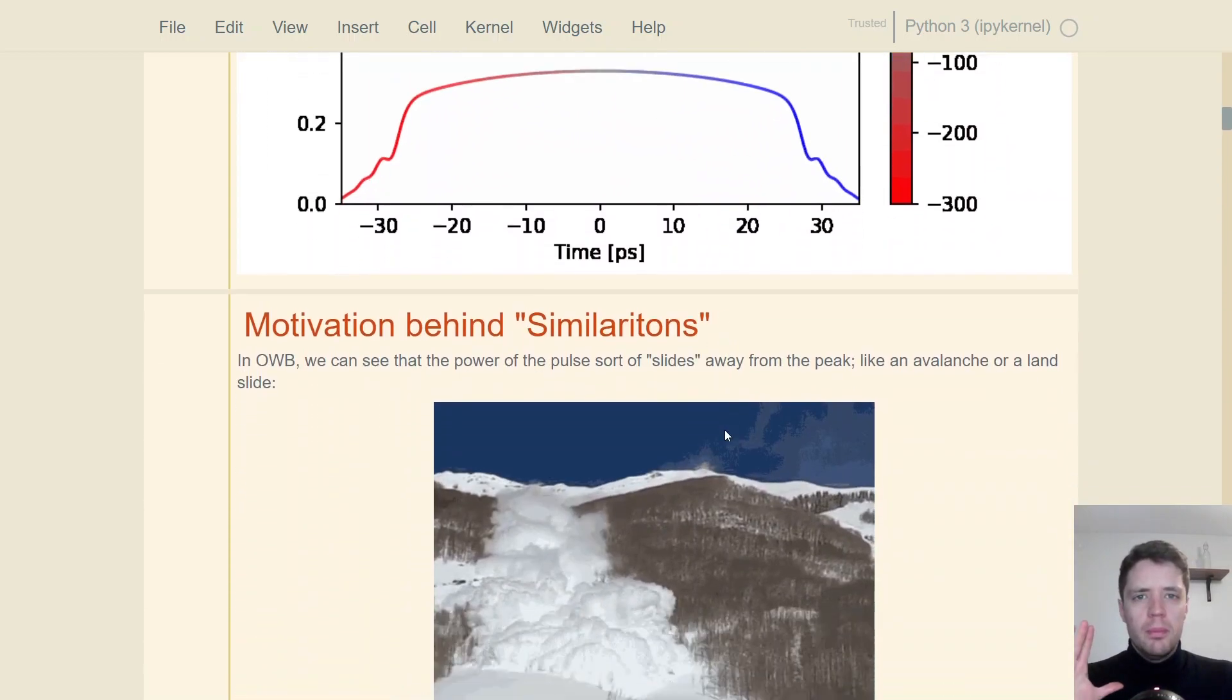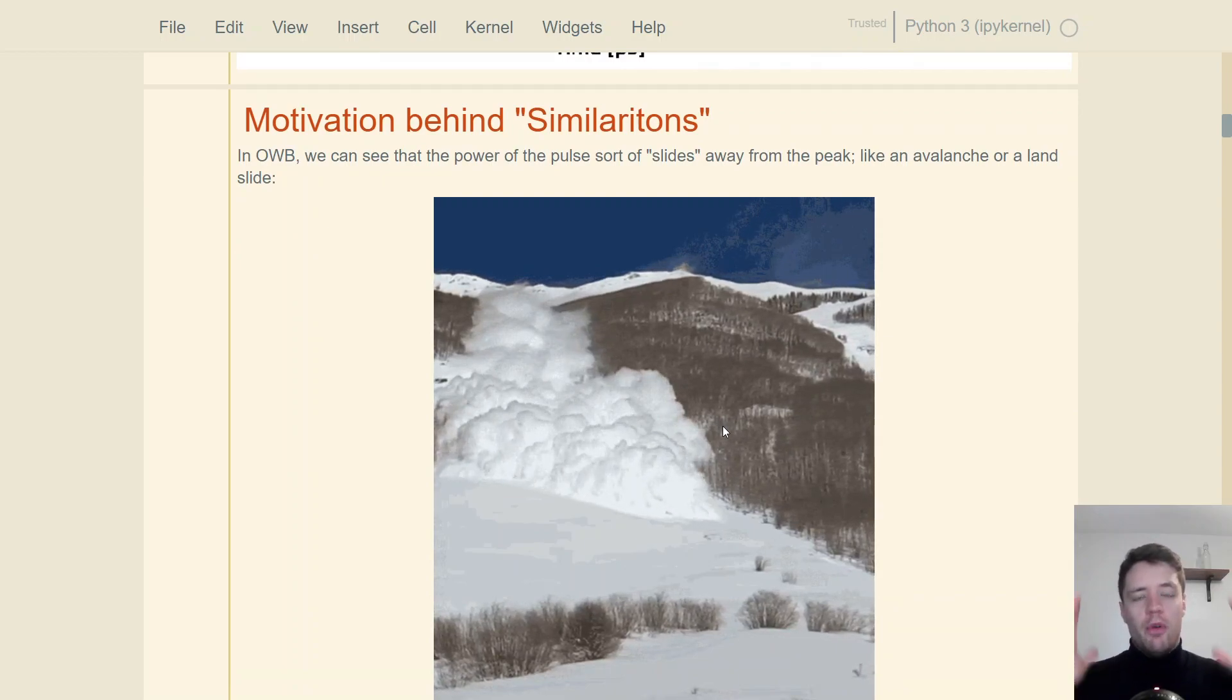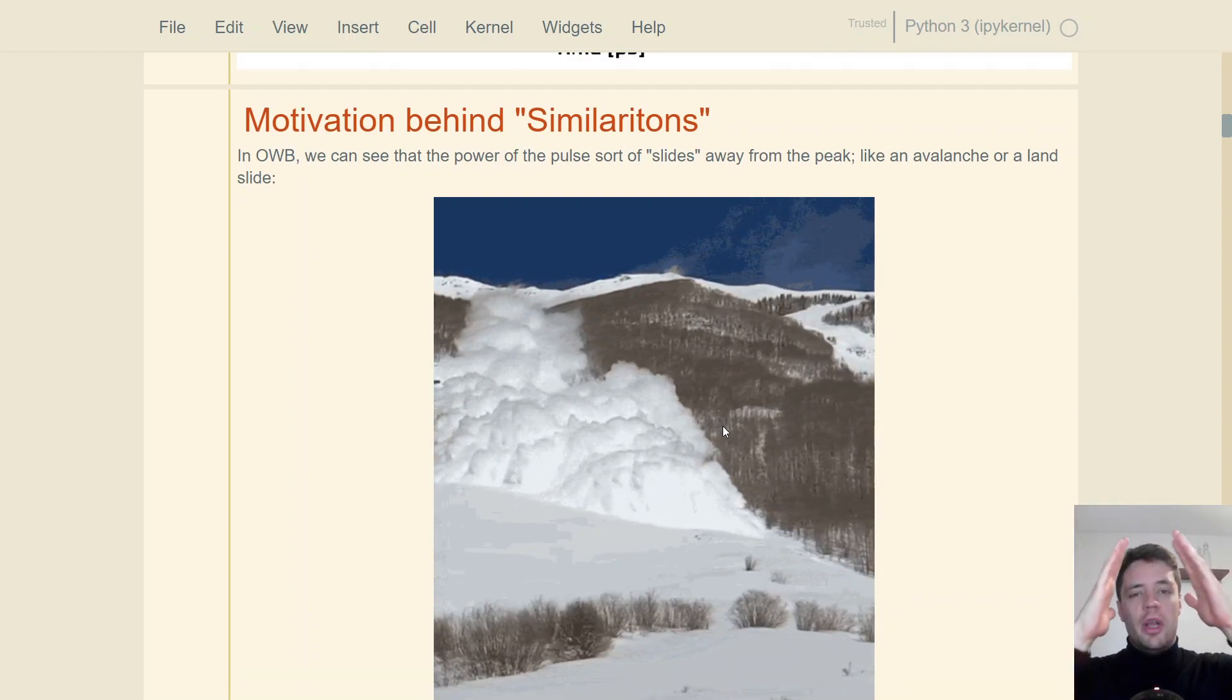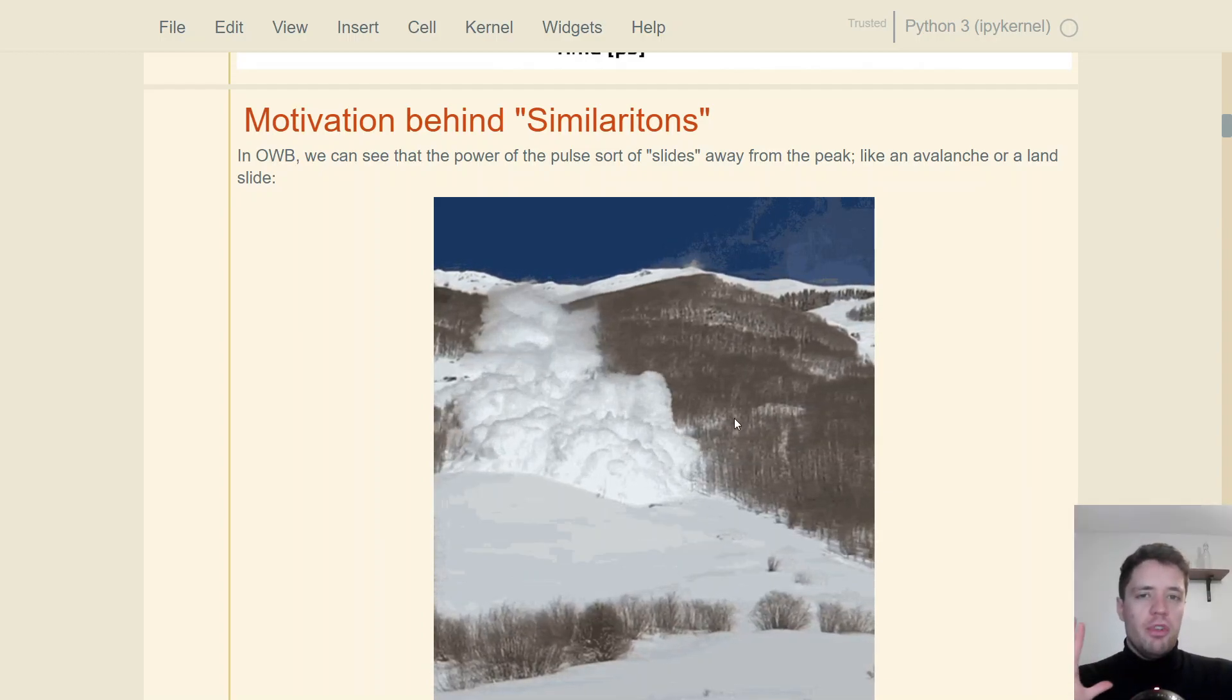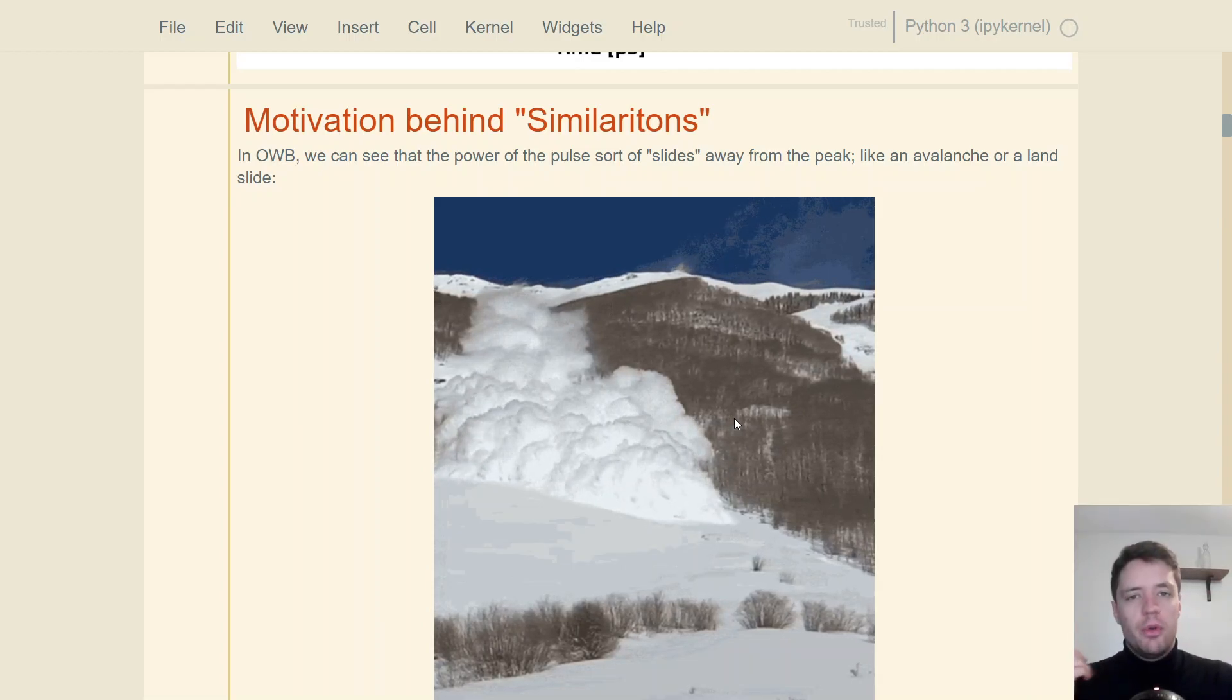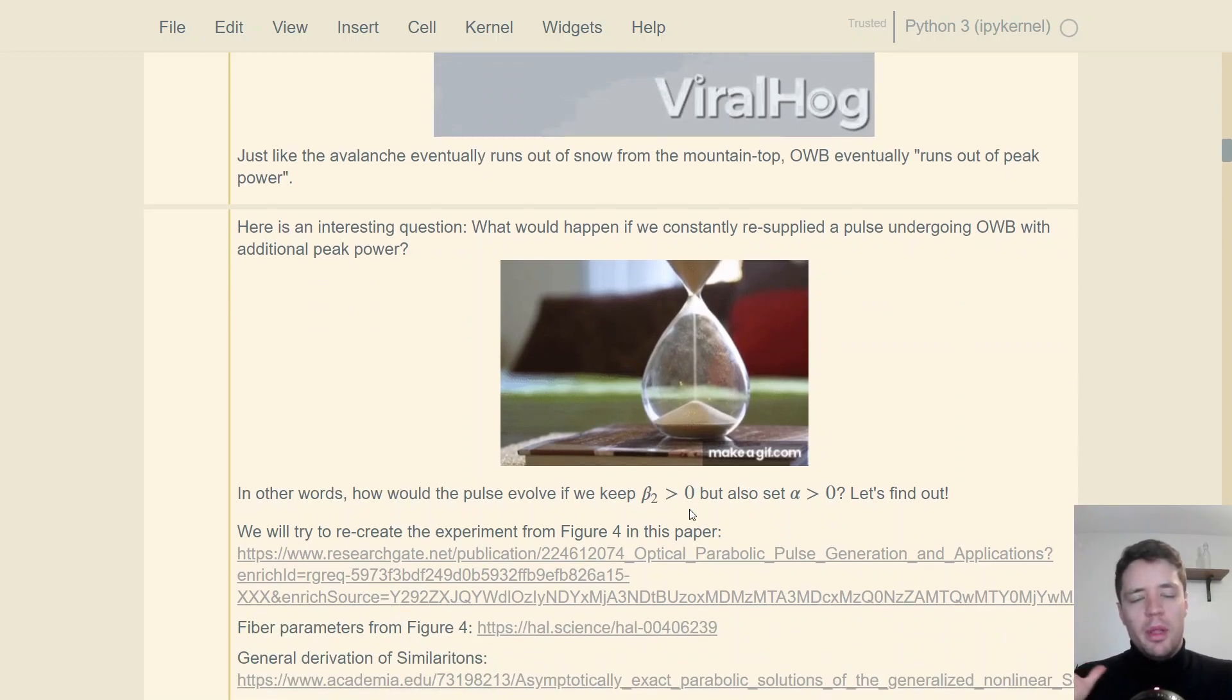Now, to motivate that a little bit more, I think it's helpful to think about optical wave breaking in the case with no gain, simply like an avalanche, where we have all this sort of power, or snow in this case, collected in one location and it sort of spreads out as we move forward. But what happens if instead of having only a fixed amount of matter that can spread out, we keep adding more stuff on top. Basically, we can think of this a little bit like this hourglass we're seeing right here, where we can see that the pile of sand at the bottom here does indeed spread out over time, but we're also constantly adding more and more stuff on top of it, causing it to sort of retain its shape as we go forward while still broadening a little bit.